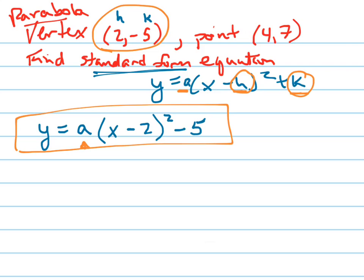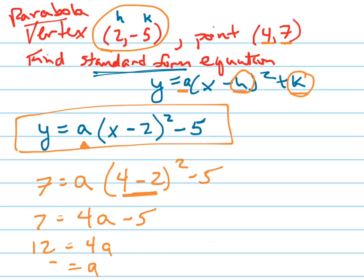Alright, so let's do that by writing 7 is Y, 7 equals A, which I don't know yet, times 4 is X, 4 minus 2 squared minus 5. And I'll just solve for A. So 7 equals 2 squared is 4, 4A minus 5. Add 5 to both sides. 12 equals 4A. A equals 3.